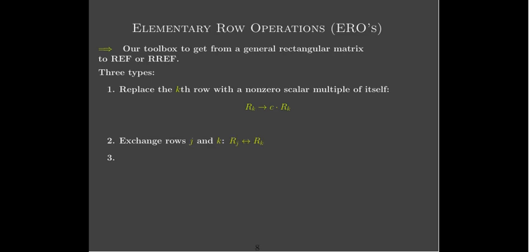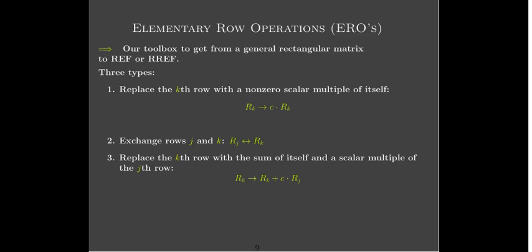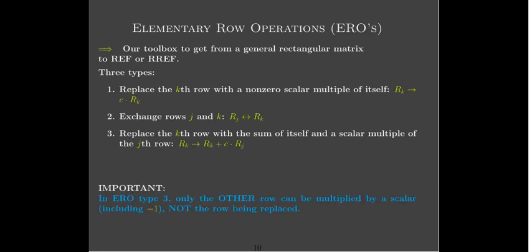The second type is to simply exchange rows j and k — it's just a swap of rows. The third type is the most important. You're going to replace a row with a sum of itself and a scalar multiple of another row. What's important here is that you can only multiply the other row — you can't have anything multiplied by the row that you're replacing. It might seem restrictive, but it's very important to develop this systematic method.